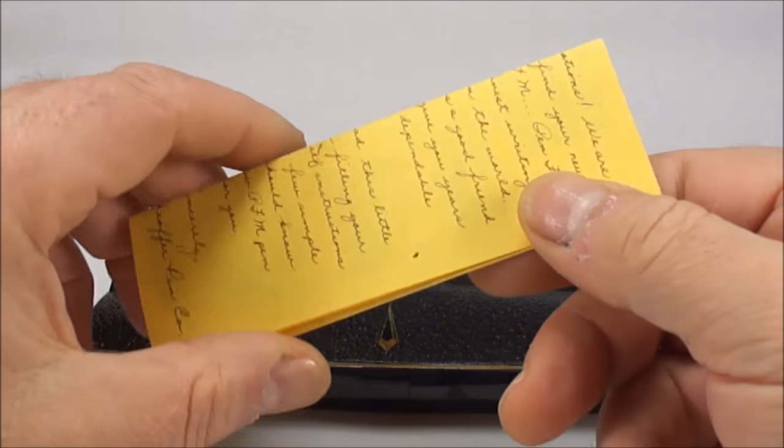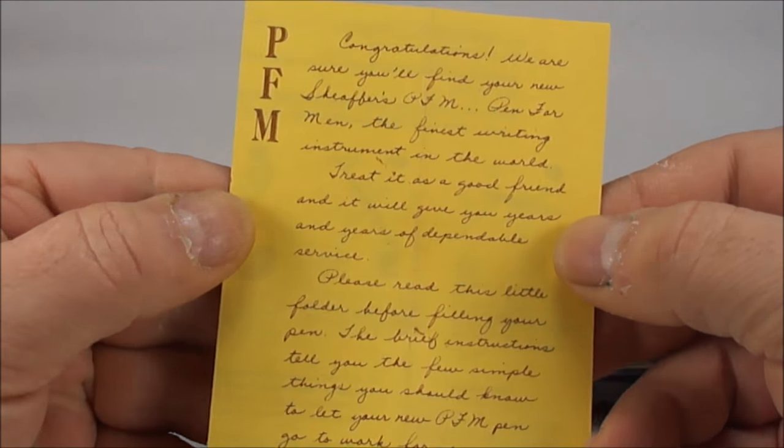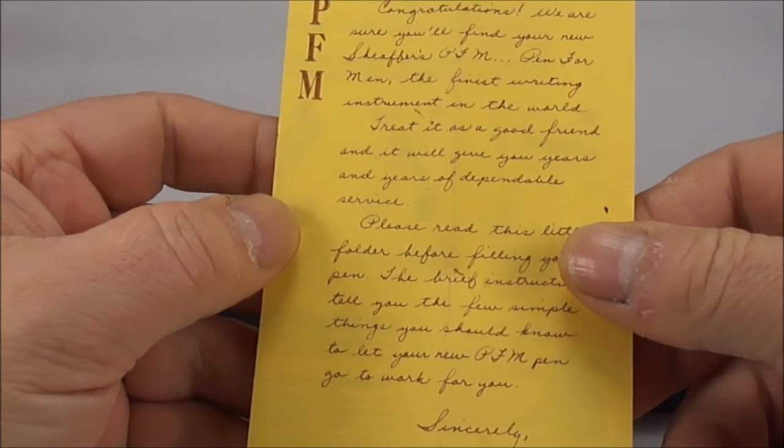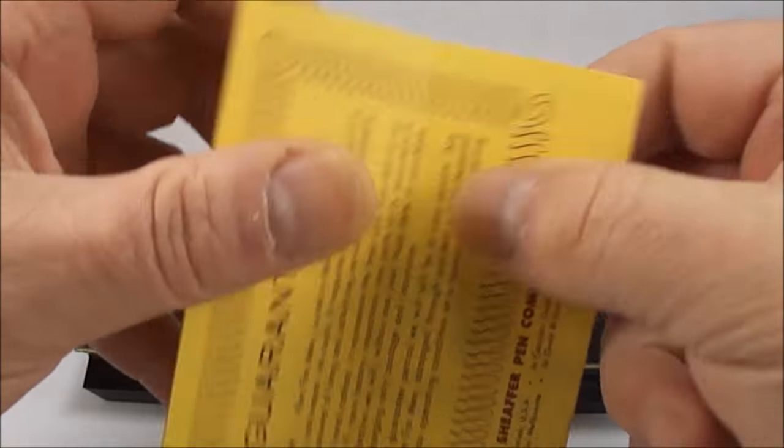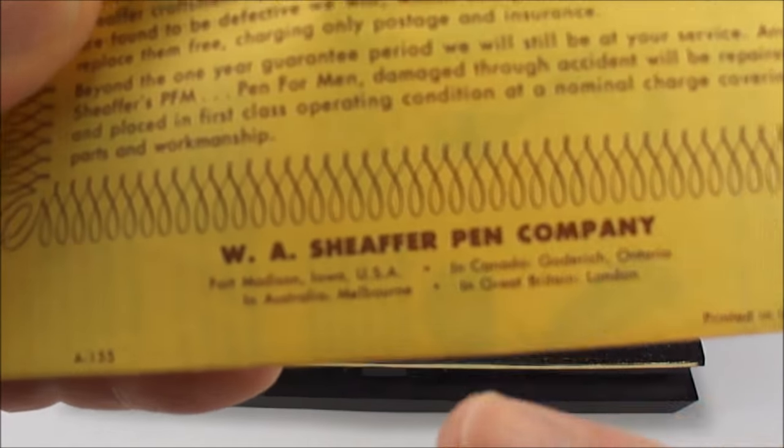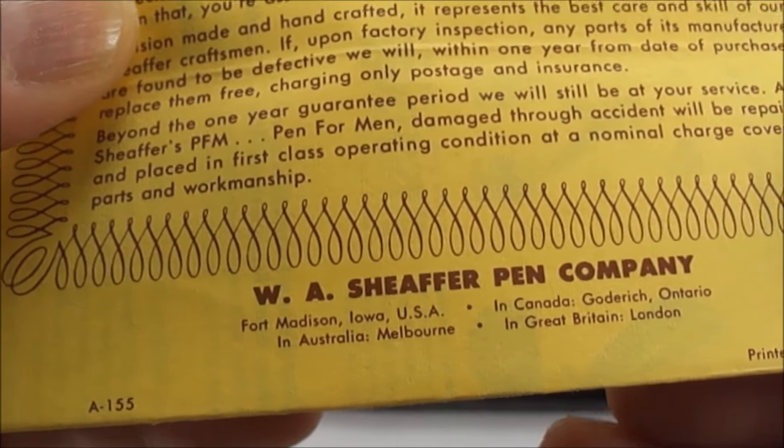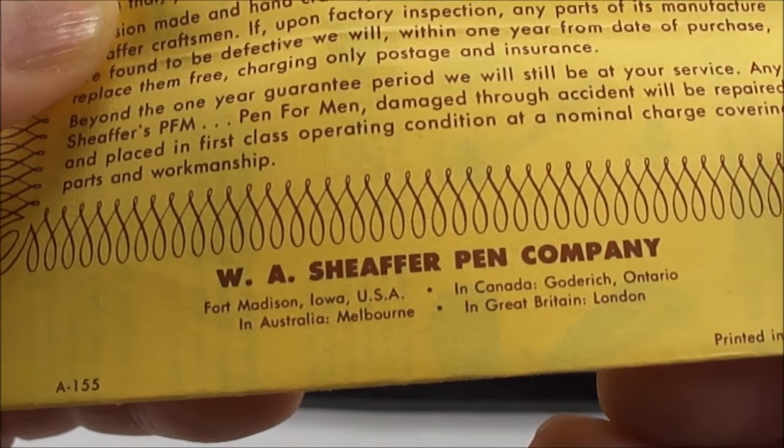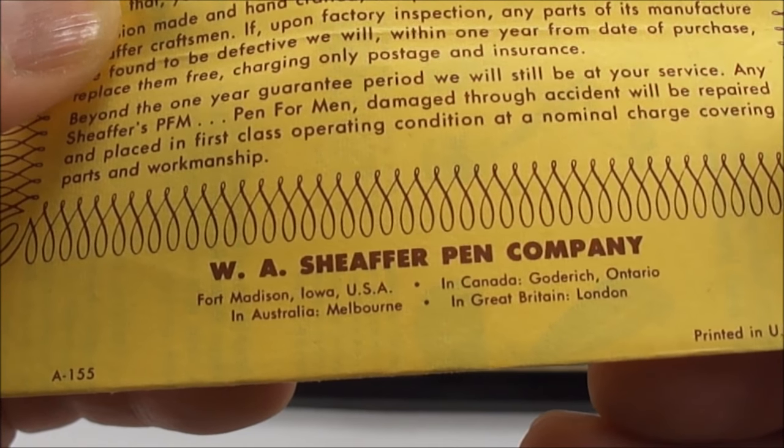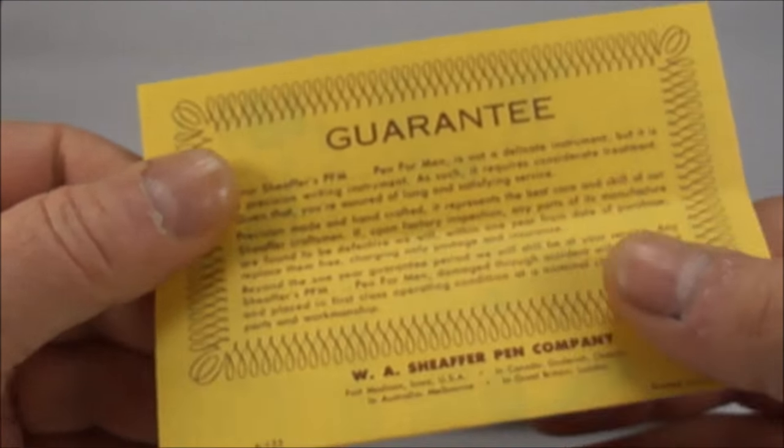Not only is it unusual in my opinion to find the original case with these pens, but what we've got as well is the instructions, which again I feel is quite unusual to find in these circumstances. It tells you congratulations, gives you a bit of indication about the pen, and to the back you've got the guarantee. Interestingly, just to the bottom here it says Fort Madison, Iowa USA, below that in Australia Melbourne, to the right in Canada Goldenrich Ontario, and then below there in Great Britain London. So the pens were made in four different locations.